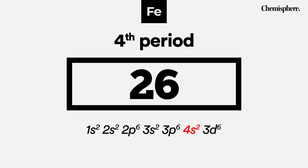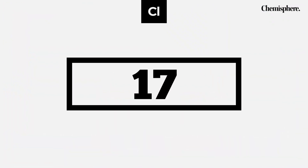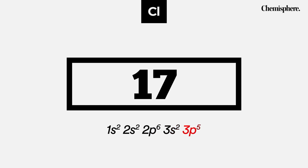Similarly, we can take another example. Let's say we have atomic number 17. The configuration for 17 is written like this. The largest number in this sequence is 3. Hence, the period of this element must be the third. That's how we find out the period.